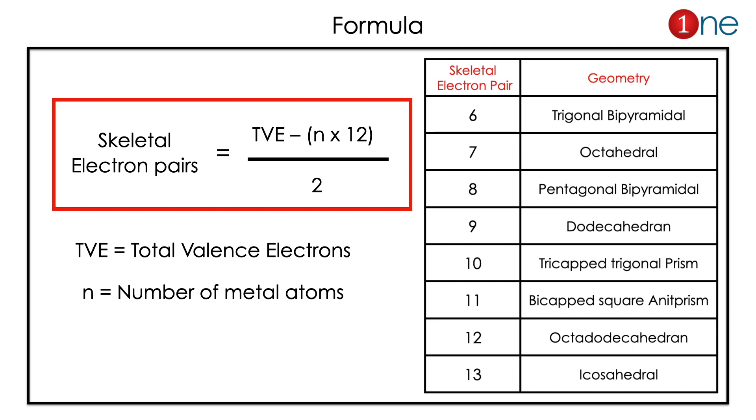If you have 6, it's a trigonal bipyramidal. If you have 7, it's octahedral. If you have 8, it's a pentagonal bipyramidal, so on and so forth. You have to memorize the table as well as the formula for the prediction.